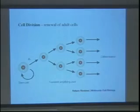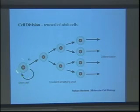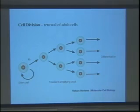Once you have an adult animal, you need to keep replacing cells for homeostasis of your organs. Generally, what you have are cells called stem cells. These divide and make not only more of themselves, but sometimes they divide to make a copy of themselves plus another cell that goes on and divides a few more times, then differentiates and becomes some sort of specialized cell type.